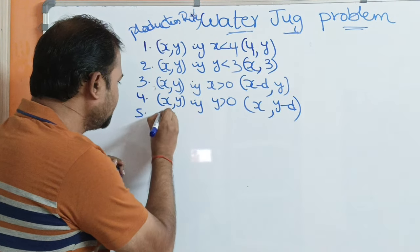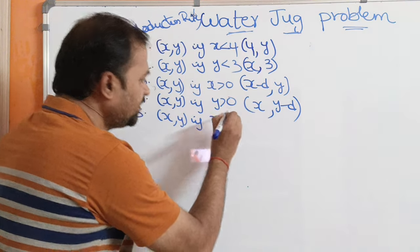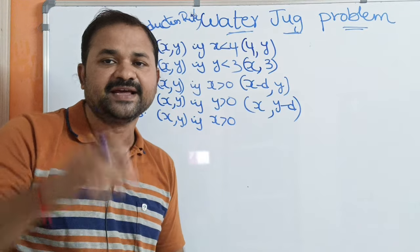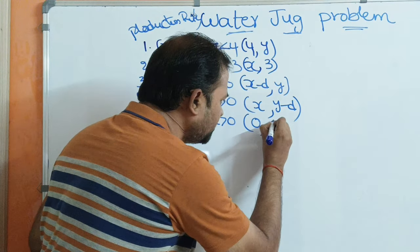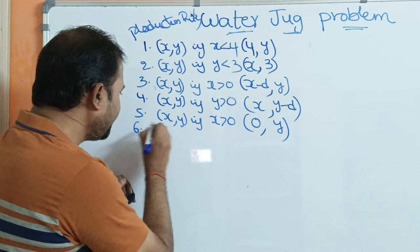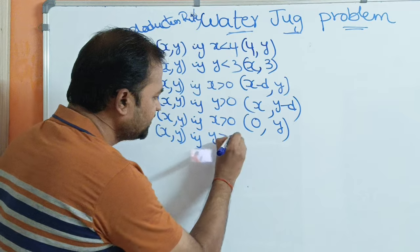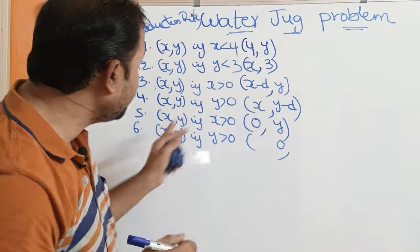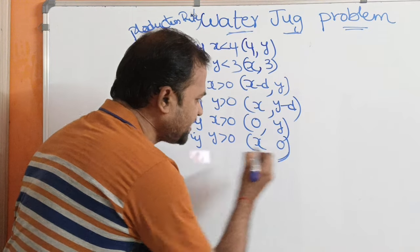The fifth rule: if x is greater than 0, meaning the 4-liter jug contains some water, we can empty it. So the state becomes (0, y). The sixth rule is similar: if y is greater than 0, we can empty the 3-liter jug, giving state (x, 0).